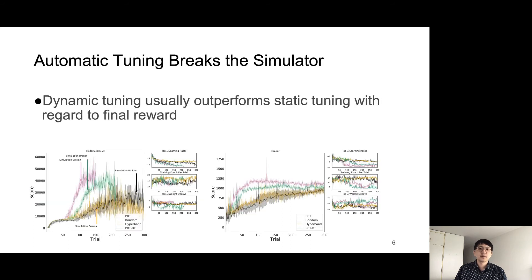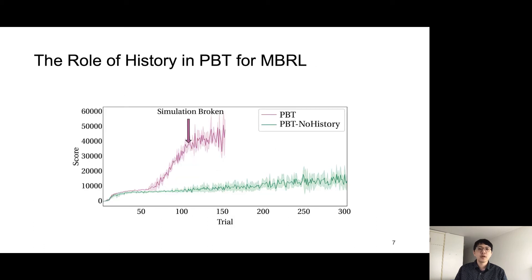By using HPO methods, we managed to break the simulation in the half-cheetah environment, and with dynamical training methods, we get even better performance. HPO methods also give us insights about hyperparameters. For example, HPO discovered that learning rate decay is scheduled without a predefined scheduler. One important part which makes PBT work in MBRL is that it also copies the history when hyperparameters are changed. This indicates that MBRL is a non-stationary process, and the hyperparameters and the corresponding training data are related to each other closely and cannot be considered or tuned separately.